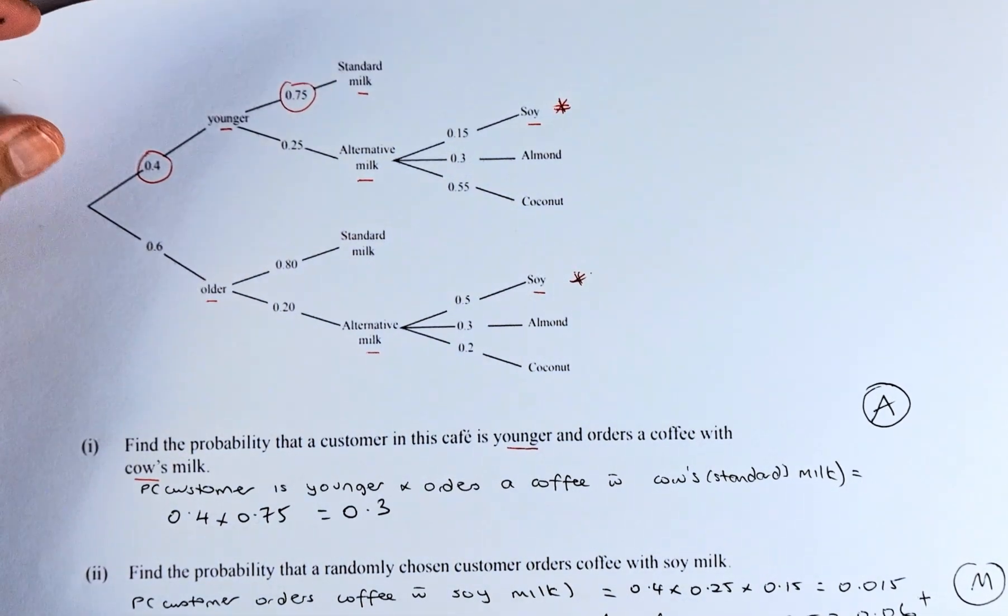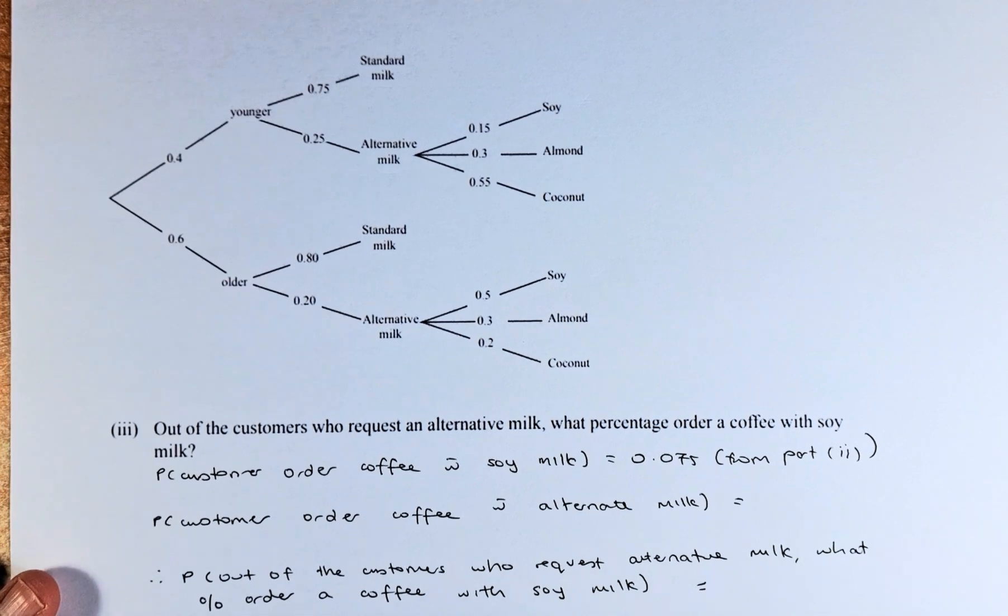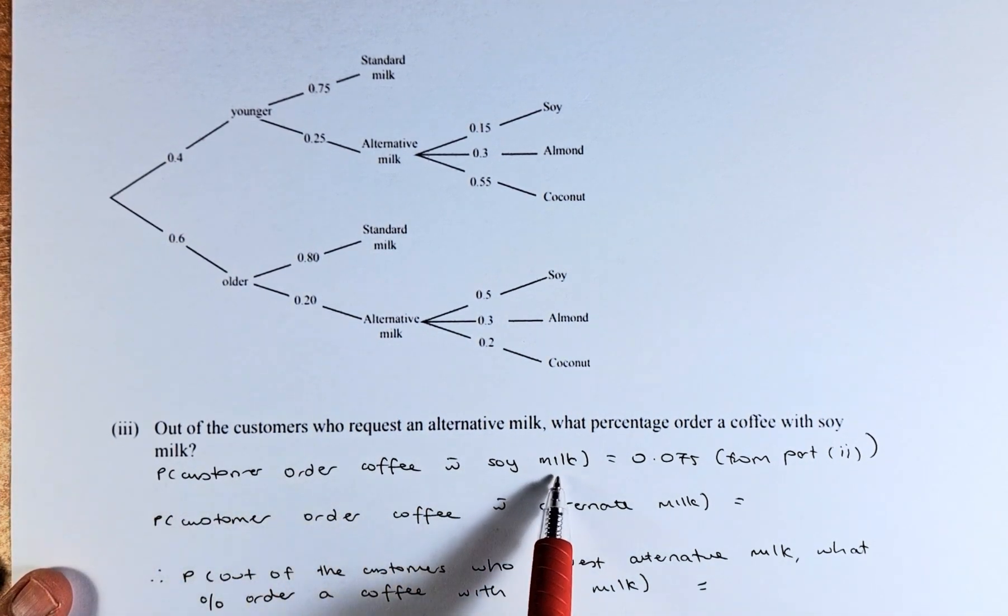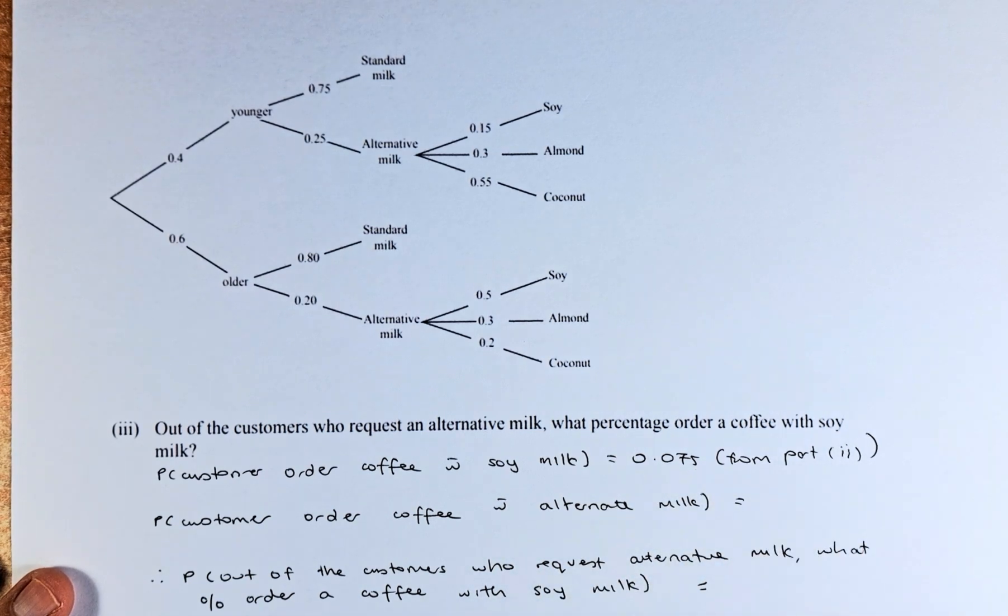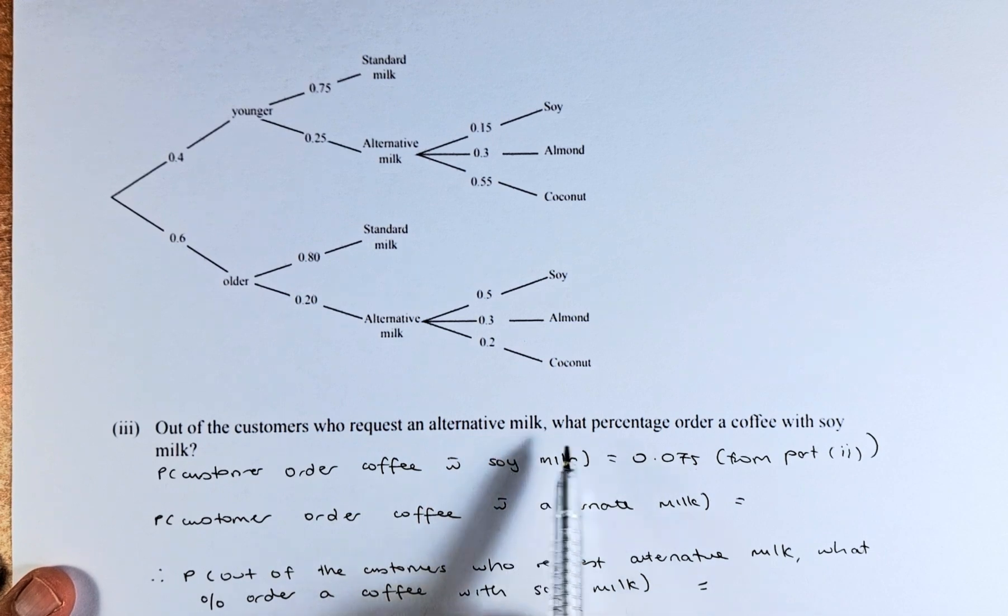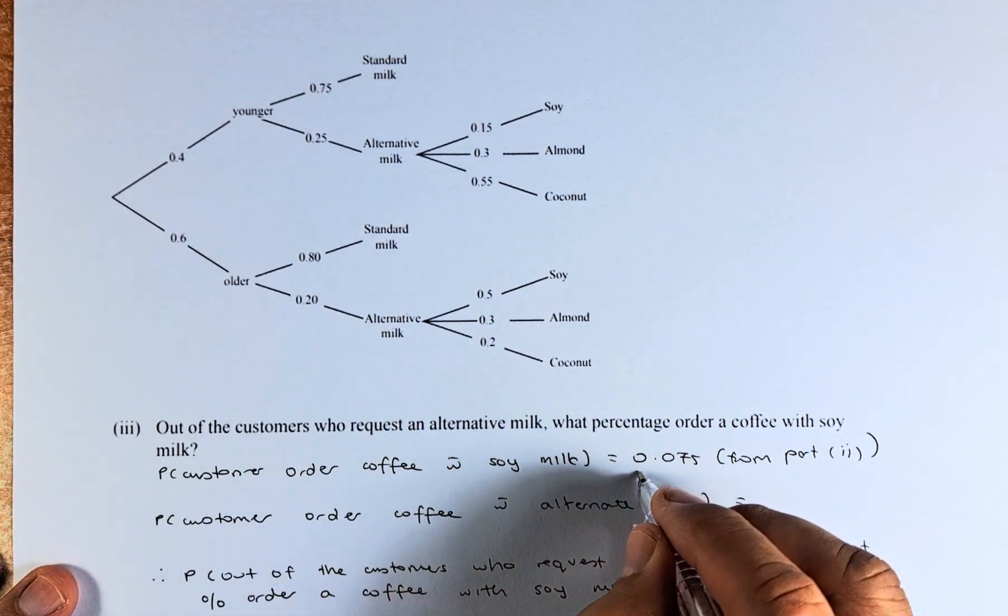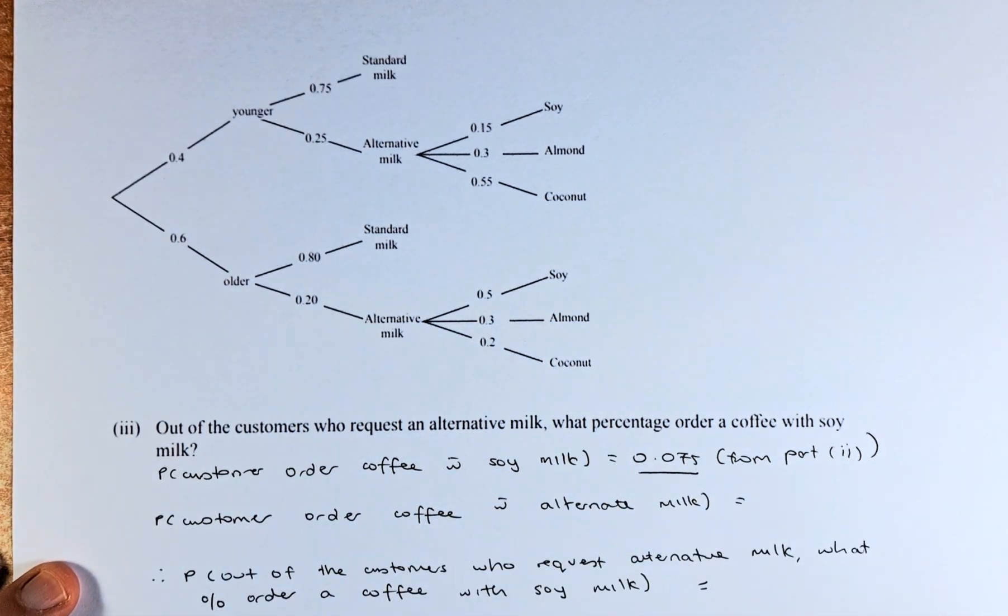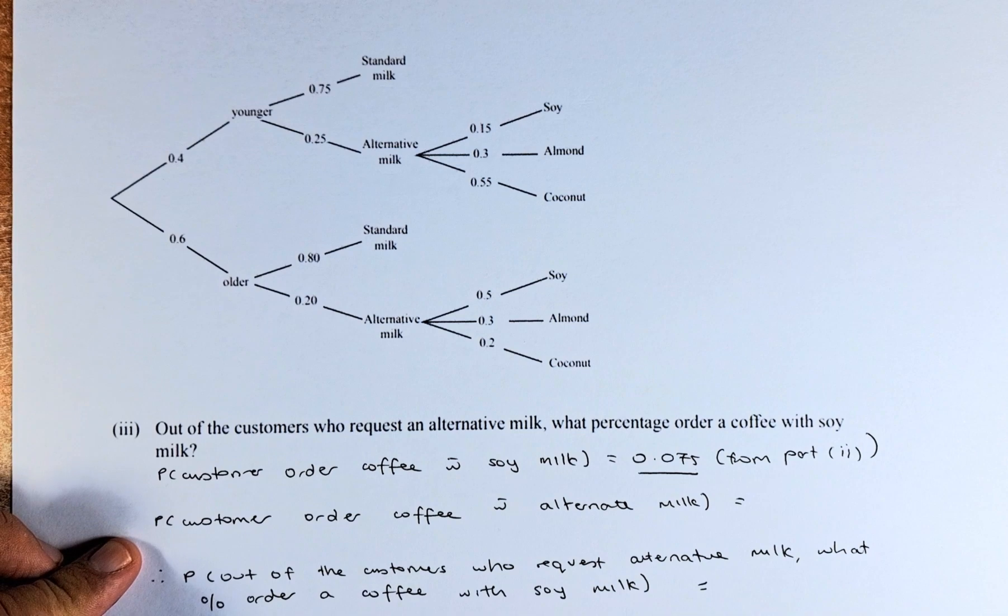Now we are going to do part 3 of this question. As I said, from part 2, customer who order coffee with soy milk is 0.075 from part 2. Now the next question is, out of the customer who requested an alternative milk, what percentage orders a coffee with soy milk? So we have found that the customer order coffee with soy milk is 0.075.